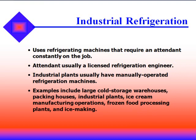First, we have industrial refrigeration. It uses refrigerating machines that require an attendant that's constantly on the job. The attendant is usually a licensed refrigeration engineer, and industrial plants usually have manual operated machines. Examples include large cold storage warehouses, packing houses, industrial plants, ice cream manufacturing operations, frozen food processing plants, and ice making.